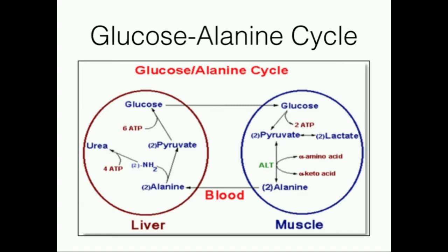The alanine is then dumped into the blood, travels in the blood, and then gets taken up by the liver. In the liver, the enzyme ALT — alanine transaminase — converts alanine back to pyruvate, the reverse of what occurred in the muscle. Then through the process of gluconeogenesis, pyruvate is converted back to glucose, which is dumped into the blood, taken up by the skeletal muscle, and the process repeats in a cycle.